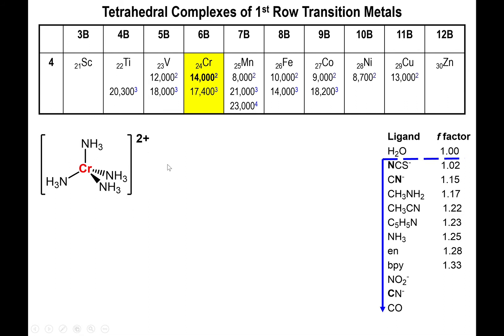Chromium 2 plus has a delta octahedral value of 14,000 for the hexa aqua complex. Since we're dealing with the amine ligand, we multiply 14,000 by 1.25. For delta tetrahedral, we multiply all of this by four ninths, since delta tetrahedral equals four ninths of delta octahedral. Four ninths times 1.25 times 14,000 gives you 7,778 inverse centimeters, which is way below the visible spectrum. This wouldn't even give you a color.